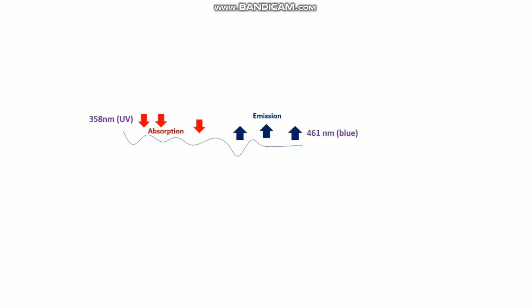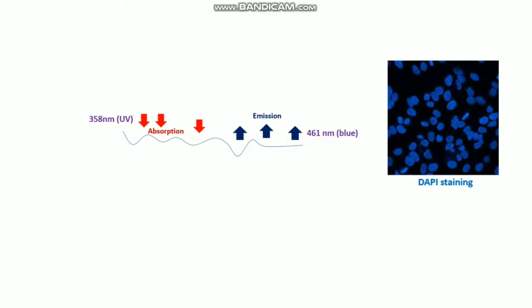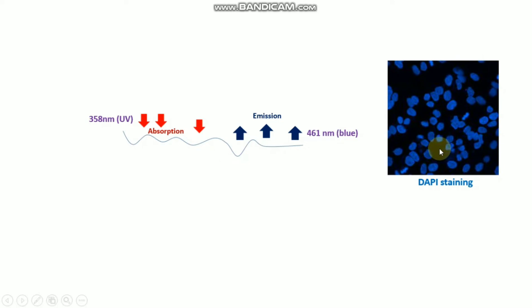DAPI has an absorption maximum at a wavelength of 358 nanometers and its emission maximum is at 461 nanometers. For fluorescence microscopy, DAPI is excited with UV light and is detected through a blue or cyan filter. This is the DAPI staining image — the nuclei are stained, and this blue color is showing the nucleus of the cell.